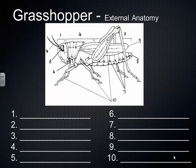Insects have three body sections, versus arachnids which have two. The first section is the head. The head of the insect contains many of the sense organs — the antennae, the eyes, and the mouth parts. The second section is the thorax. The thorax is where the wings and the legs attach.